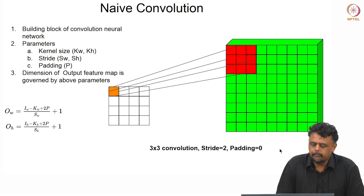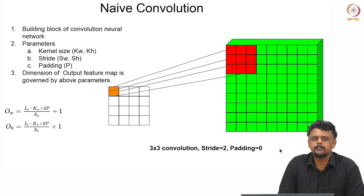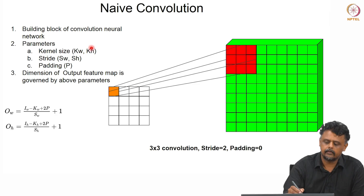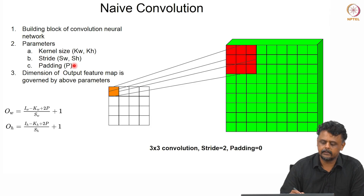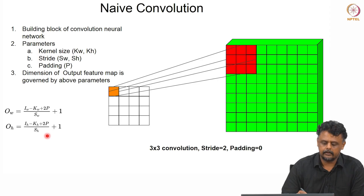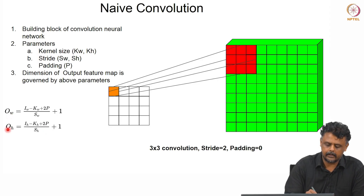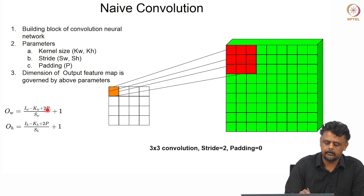So just to recap, what we call naive convolutions — this is the typical convolutional operation done in a deep neural network. We have a given kernel size K, a stride used in the convolution, and the padding, and given an input feature map of size i_w and i_h (width and height). The output feature map's width and height are calculated by: (size of feature map minus kernel size plus 2 times padding) divided by stride, plus 1.